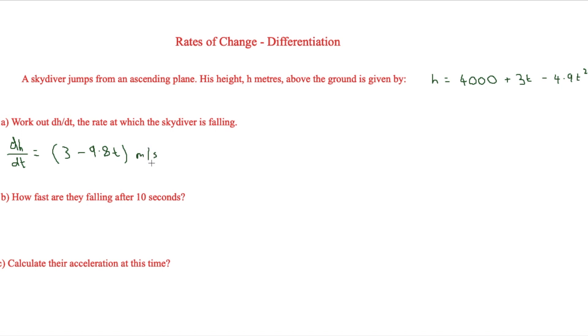So the next question asks how fast they are falling after 10 seconds. And for this, all we have to do is substitute t for 10. So therefore, 3 minus 9.8 times 10 is equal to 98, which is equal therefore to minus 95 meters per second.